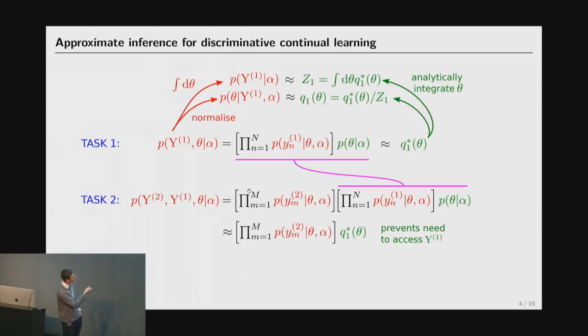We just need access to the previous approximation and the current task likelihood. So we can do incremental continual learning updates without revisiting the old data. This, of course, is still intractable because I'm multiplying some nice tractable thing, Q1 star, by a set of likelihoods. So then we're going to need to do another approximate inference step to get to Q2 star, which is tractable, which we can then recurse again. So this is just online approximate inference, essentially, using the previous approximate posterior as the prior for the next task and recursing. Any questions about that? Does that make sense?